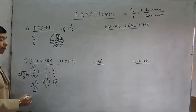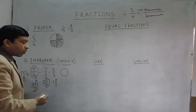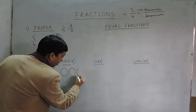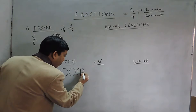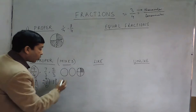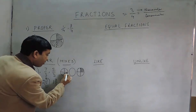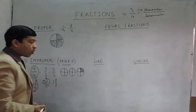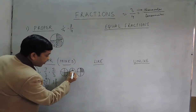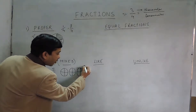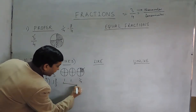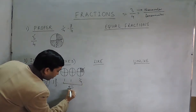When I say 2 and 1 upon 4, that means one complete object, then a second complete object, and then out of 4 portions of the third object we are taking only one portion. So if I divide the first and second objects into 4 parts each, I am counting 1, 2, 3, 4, 5, 6, 7, 8, and 9 — this is the 9th portion. So that gives us 1, 1, and 1 upon 4, which totals 2 and 1 upon 4.